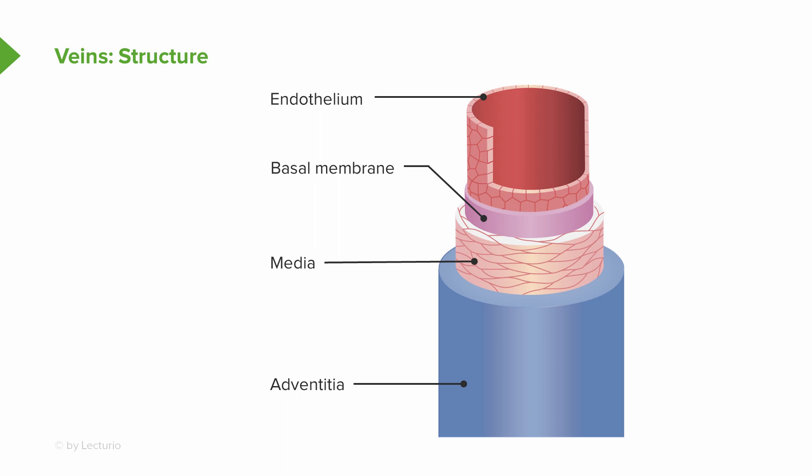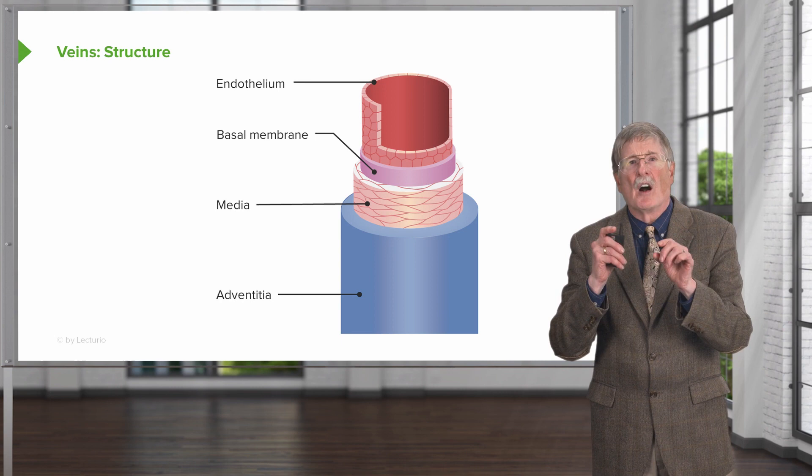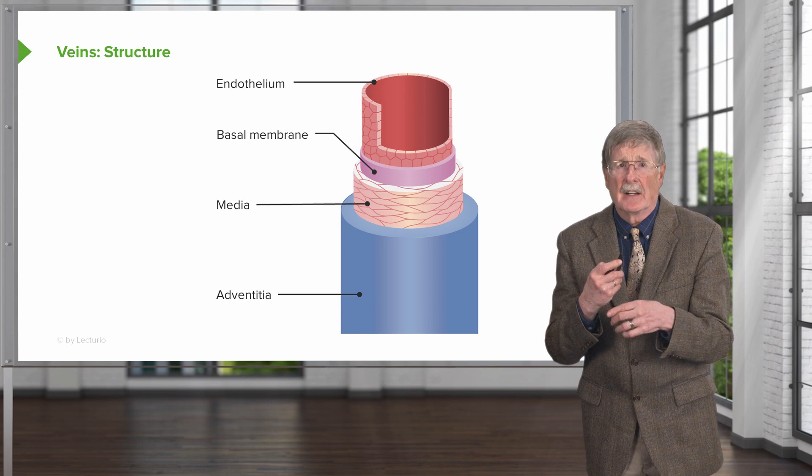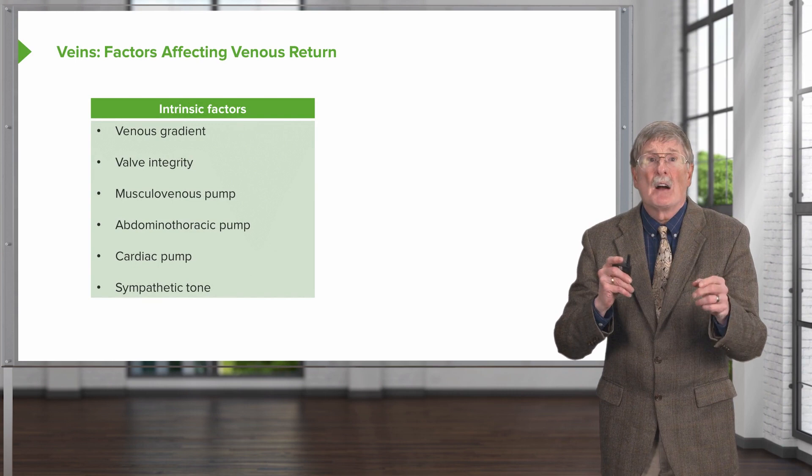By way of a very quick review, remember that the vein still has the same three-layered or three-tunica architecture as any vessel in the body: an endothelium that sits on a basement membrane, surrounded by relatively less organized smooth muscle media, and then the adventitia around it. When we talk about injury to the venous wall, all three of these layers can come into the equation.